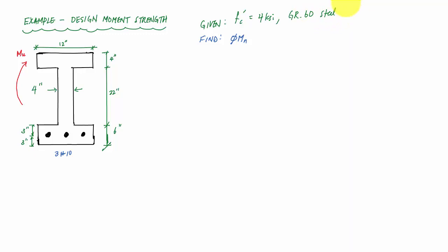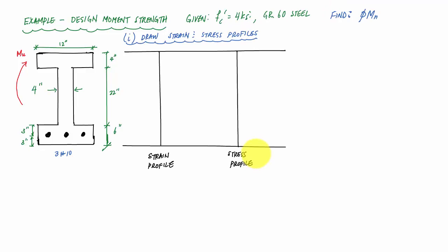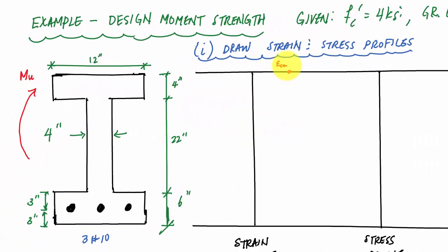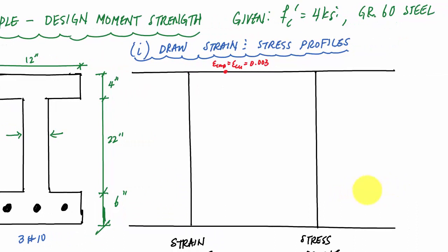The first thing I like to do when analyzing a reinforced concrete beam section is to draw the strain and stress profile so I can visualize the section. The compressive strain at the very top of the beam is going to reach the ultimate strain of 0.003 according to the ACI code — this is when we say the concrete crushes. What I don't know yet is where the neutral axis is going to be: is it in the web or in the flange? That's going to affect my calculations for the compression force resultant.